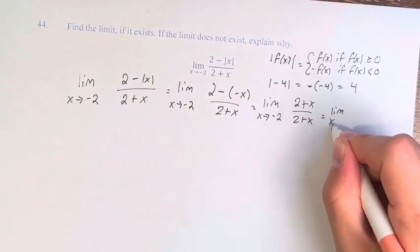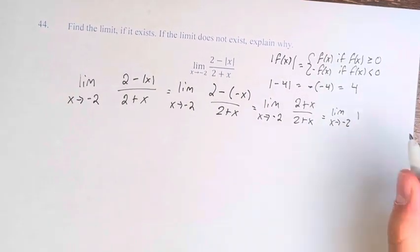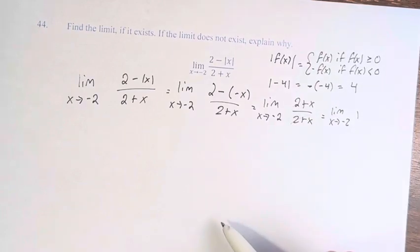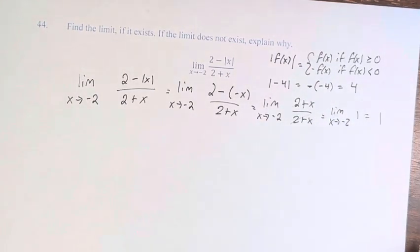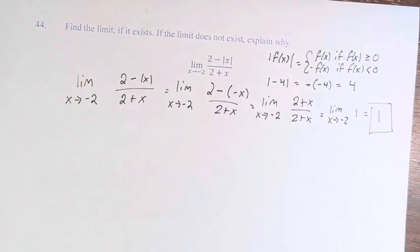This is just the limit as x approaches negative 2 of 1, since these basically just cancel out. And this is just 1. Therefore, the value of this limit is 1.